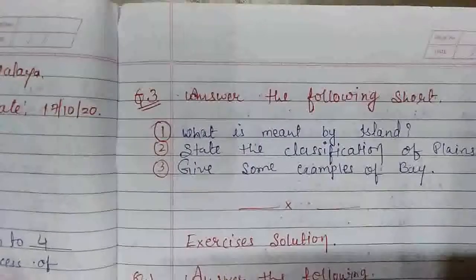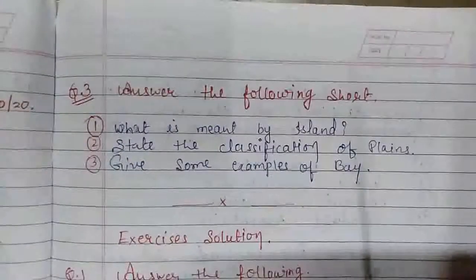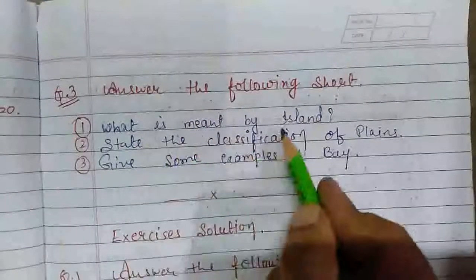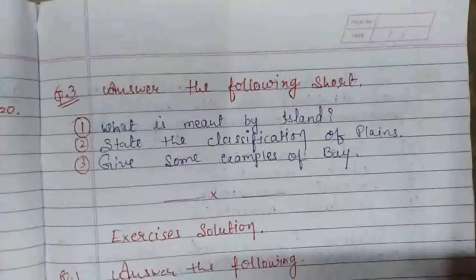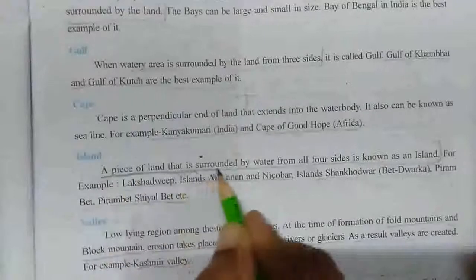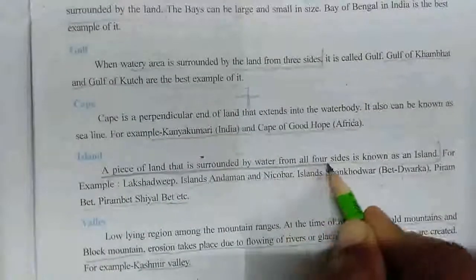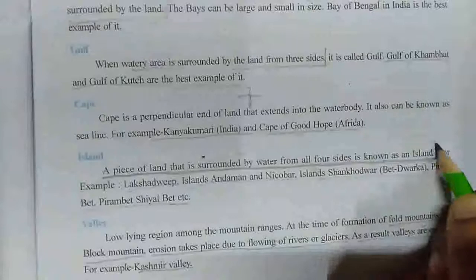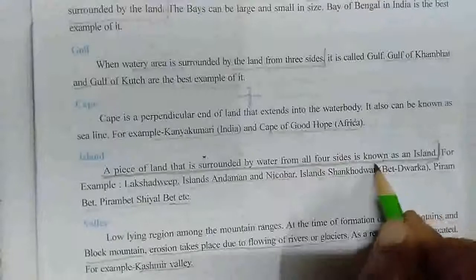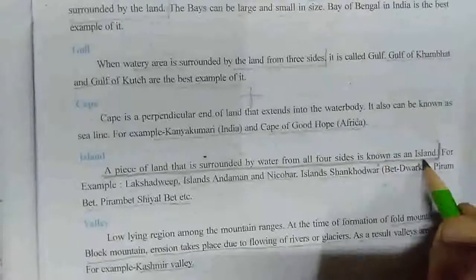Question answer: What is meant by island? Island ka matlab kya hai? A piece of land that is surrounded by water from all four sides is known as an island. Land ka aisa area, ki jiski charo aur water bodies ho, aur beech mein land surface ho — that is known as an island.